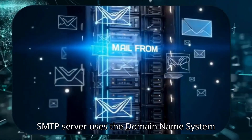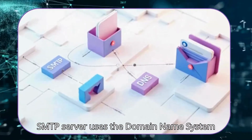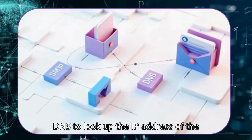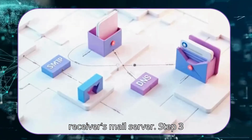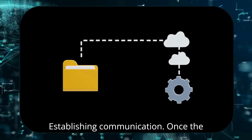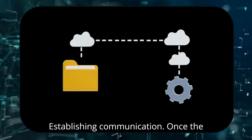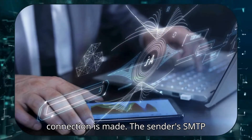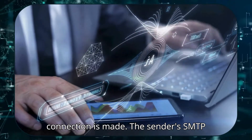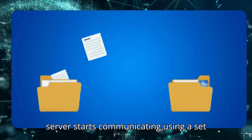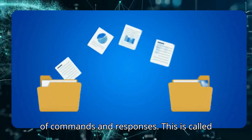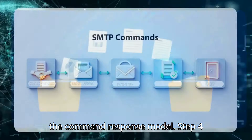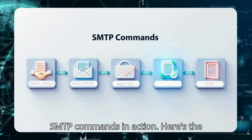Step 2 — Finding the receiver's mail server: the SMTP server uses the Domain Name System (DNS) to look up the IP address of the receiver's mail server. Step 3 — Establishing communication: once the receiver's mail server is found, a connection is made. The sender's SMTP server starts communicating using a set of commands and responses — this is called the command-response model.